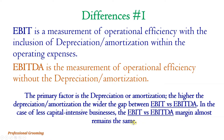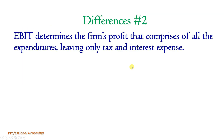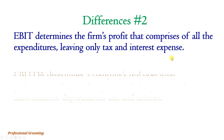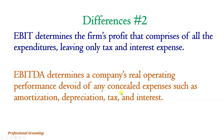In the case of less capital-intensive businesses, the EBIT versus EBITDA margin will be almost the same, because if you have more assets in your company the difference will be higher, and if the assets are fewer the depreciation will not be much, so both margins remain almost the same. Difference number two: EBIT determines the firm's profit that comprises all expenditures leaving only tax and interest expense.